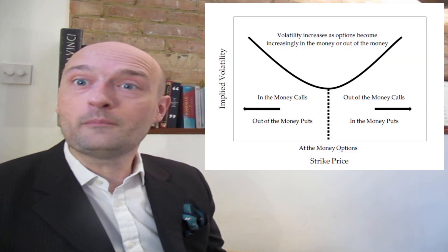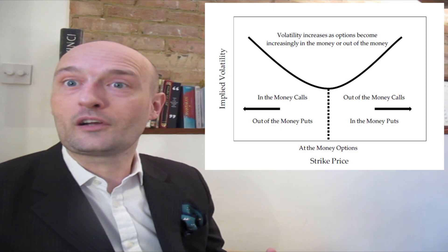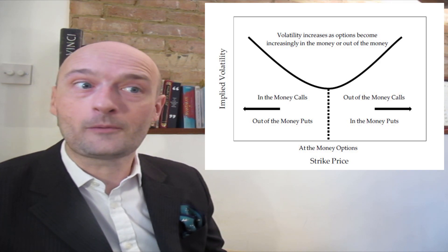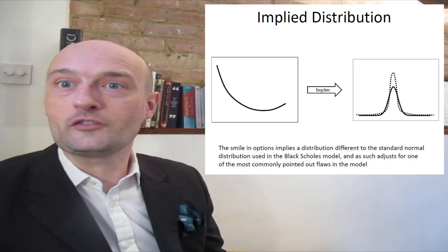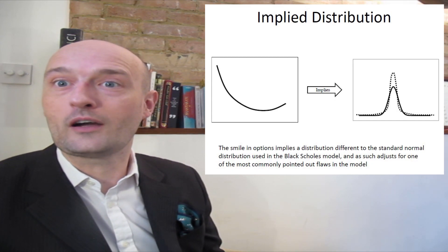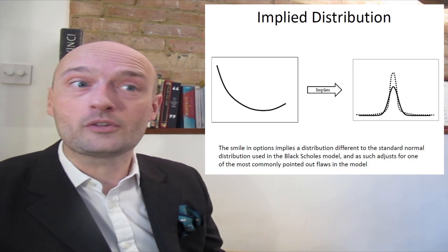When those events happen more often, it's wrong to price options assuming the underlying is normally distributed. We do that, and then we find we've got this smile — and really it's just that people buying and selling deep in-the-money or far out-of-the-money options are charging more for them because those moves are actually more likely than the model says. A smile in options implies a distribution different to the standard normal distribution used in our models, adjusting for one of the most commonly pointed-out flaws in Black-Scholes.